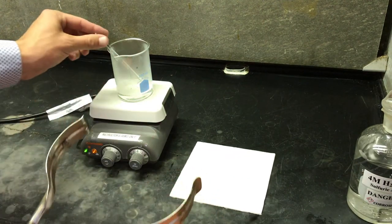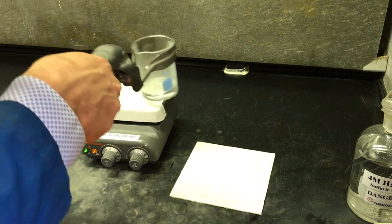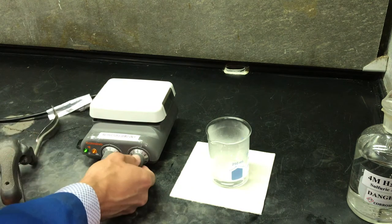Now that the solution in our reaction beaker is hot and clear, we will remove it from the hot plate with beaker tongs and place it on an insulated pad.